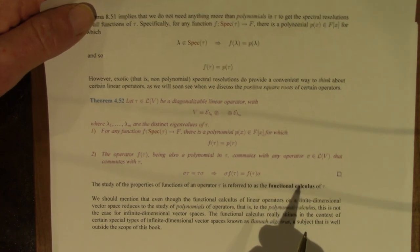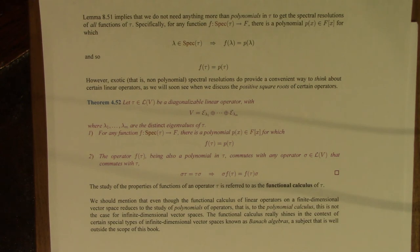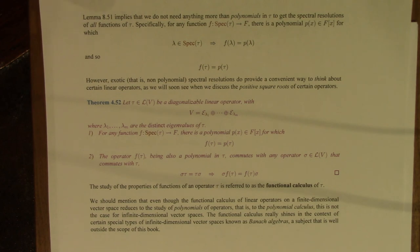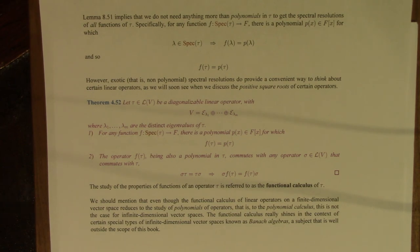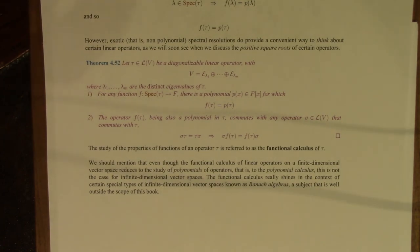That's a little unfortunate in some ways, but it still doesn't render these exotic functions useless — sometimes it's helpful to think of the square roots and exponentials of operators. Also, a polynomial in tau commutes with any operator that commutes with tau, so f(tau) being a polynomial in tau will commute with any operator sigma that commutes with tau. The study of these properties is known as the functional calculus of the operator. The downer is that for finite-dimensional vector spaces it's really the same as polynomial calculus — but for infinite-dimensional spaces like Banach algebras, the functional calculus really comes into its own.